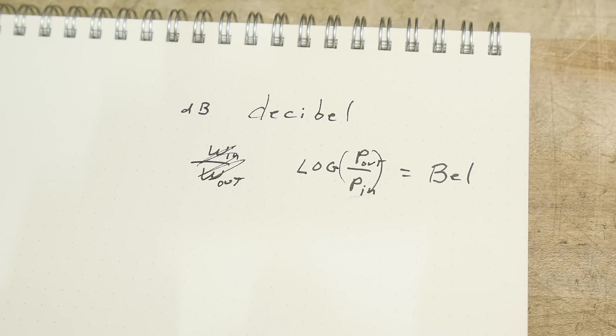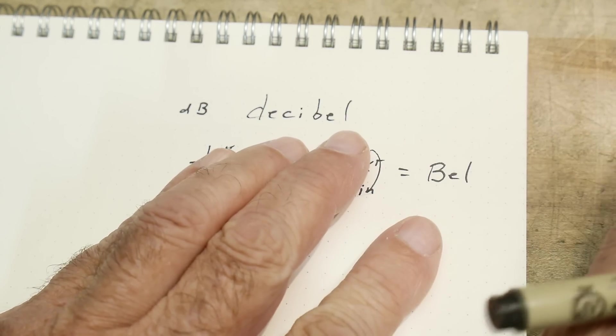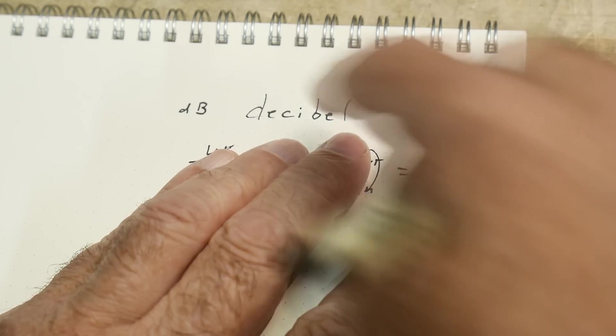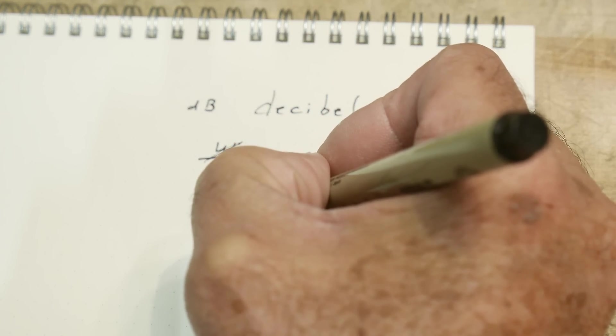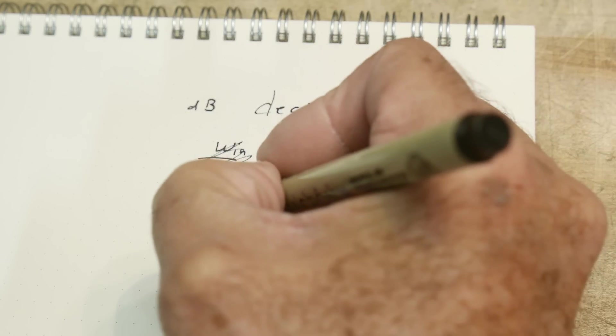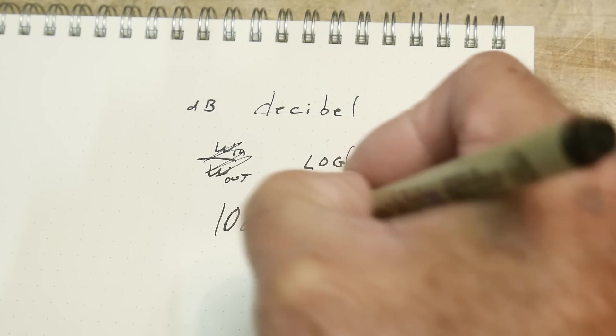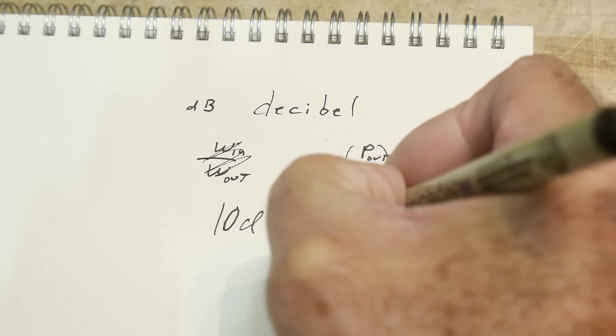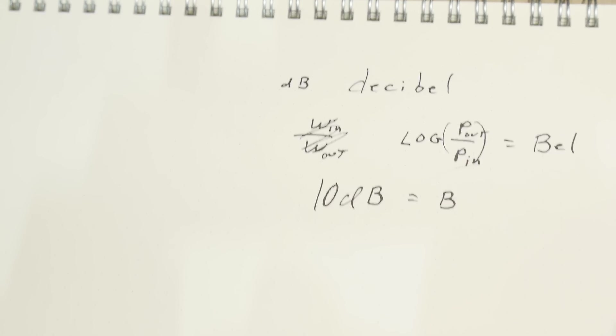They needed something that's one tenth of that, and that's the decibel. Decibel means one tenth of a Bell, so one decibel, or actually it's 10, so you need 10 decibels to equal one Bell.